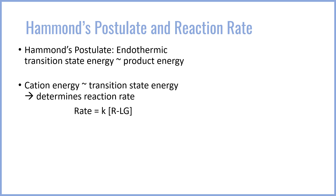Because the cation is the product of the initial SN1 step — the breaking of the leaving group bond — that is an endothermic process, and so the transition state is going to be very similar to the energy of the cation. Cation energy is similar to transition state energy, and so the energy of the cation, aka the stability of the cation, is going to determine reaction rate.